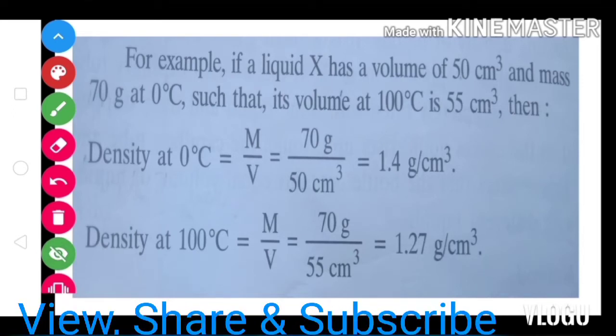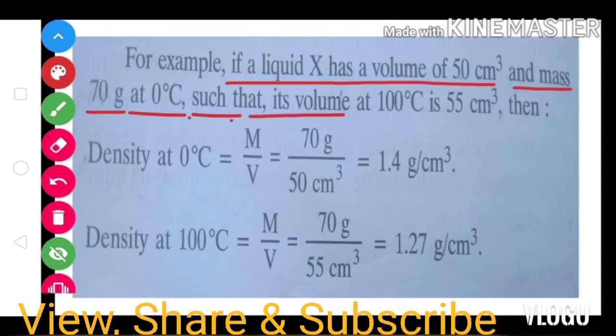Let us take an example. If a liquid X has a volume of 50 cm³ and mass of 70 grams at 0°C, such that its volume at 100°C is 55 cm³, then: